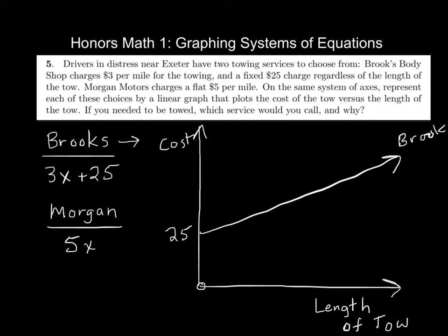And this would be Brooks. And then, where does Morgan start? 0, 0. Eventually, because the slope is steeper for Morgans, it's steeper, it's 5x, it's going to be steeper on the graph. And eventually, it's going to intersect, right? That's the whole idea. So this would be Morgans. Again, I'm just doing a sketch.